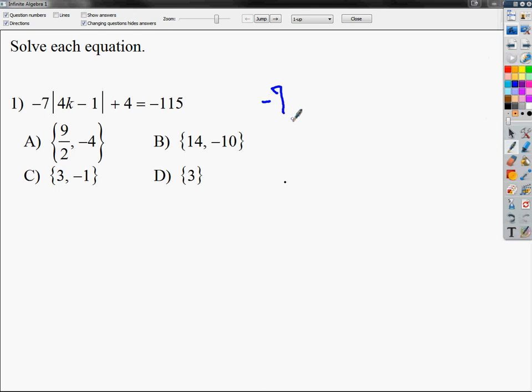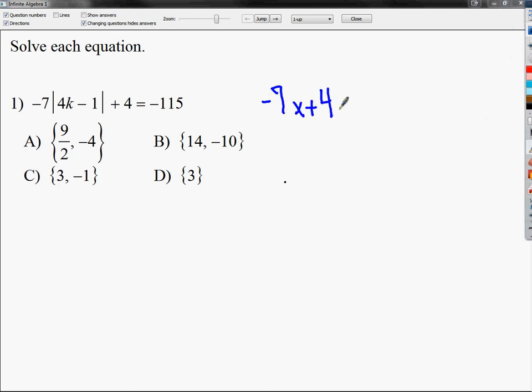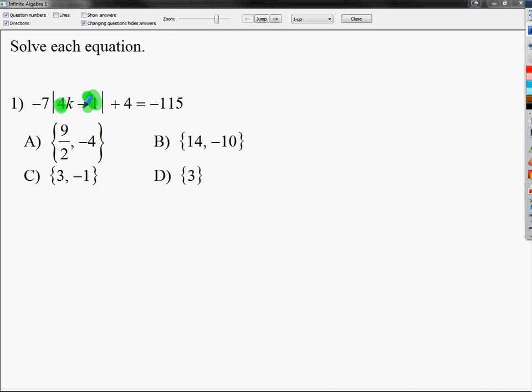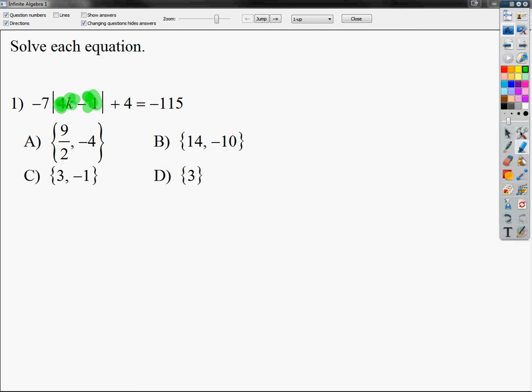Now, if I gave you -7x + 4 = -115, you would totally know how to do that problem. You've done it a million times and you shouldn't have any big issue with it. This is a very similar type of problem. Instead, for this one, the only major difference is instead of looking for an x here, you have to think of the absolute value as the variable before you get anything else done. Once you get the absolute value by itself, you can just split the problem into two problems and solve it.